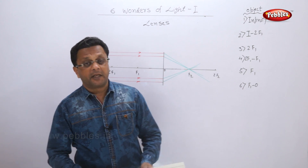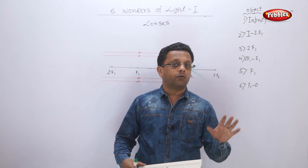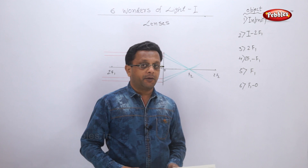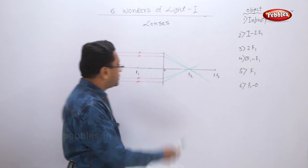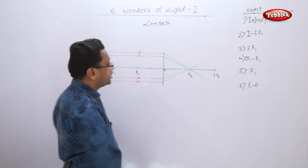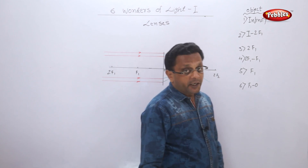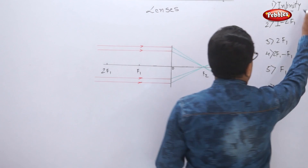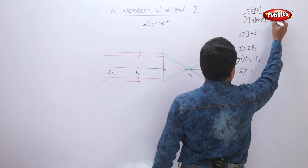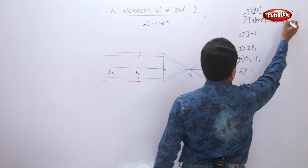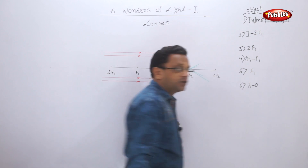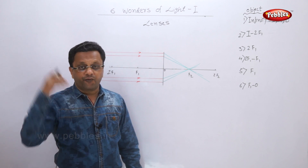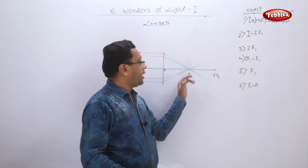In your book, many rays are shown; you can show only two or three rays — on the top and on the bottom — it is enough to describe the image. When the object is placed at infinity, the image is real, inverted, and highly diminished — a point-size image focused at F2.